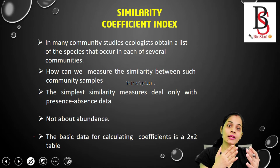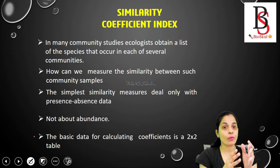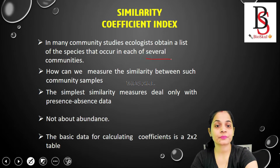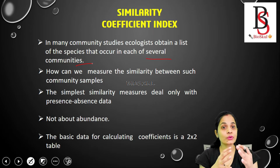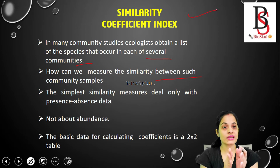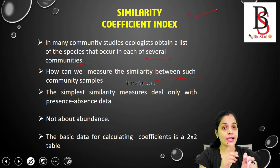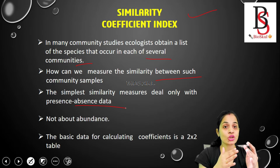While studying community ecology, researchers found that certain species are common to several communities. To calculate the similarity between such community samples, they use the similarity coefficient index. This index is based on the presence or absence of species data.